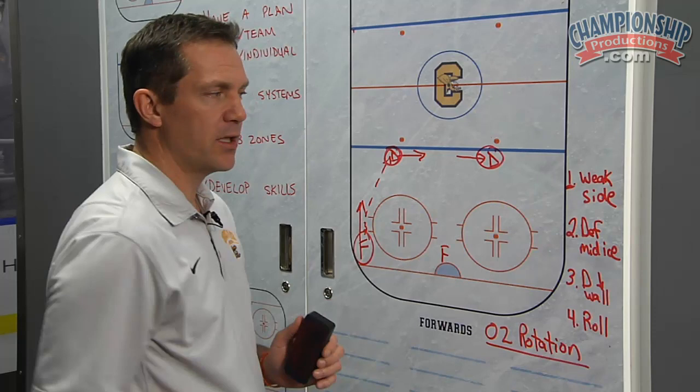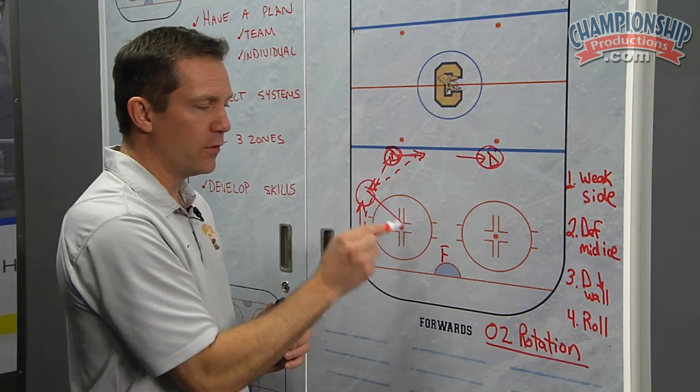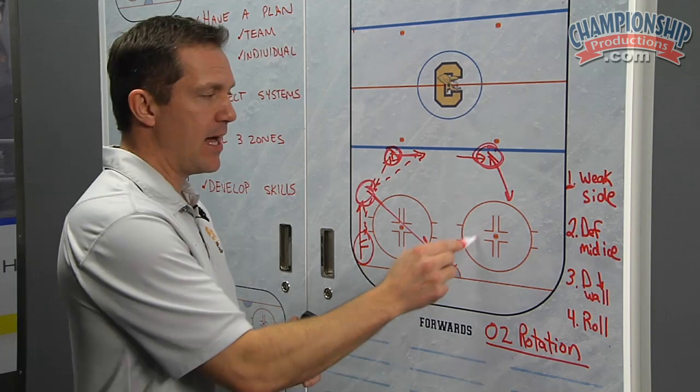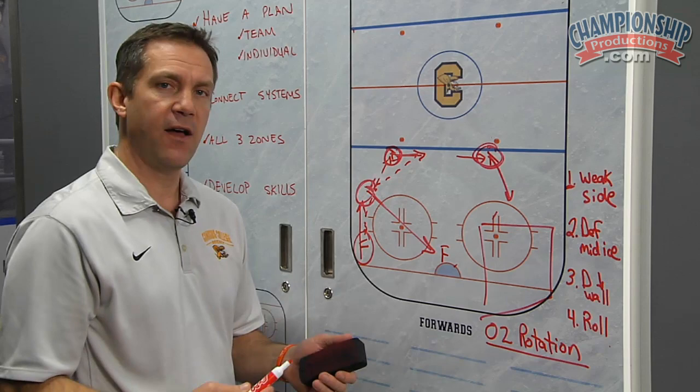We're going to talk about the weak side defenseman. We're going to pass it back to the forward for a shot on net. As he shoots it, we want this D to slide down into a position where he can hunt loose pucks. He might get a high rebound. He can also track pucks into this area to sustain offense, retrieve loose pucks, and be involved in the offensive play.